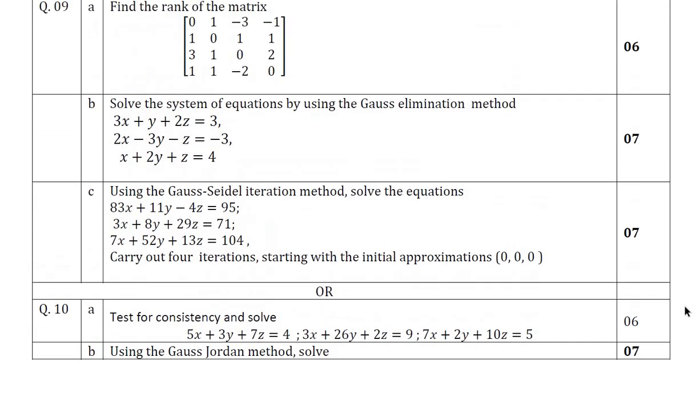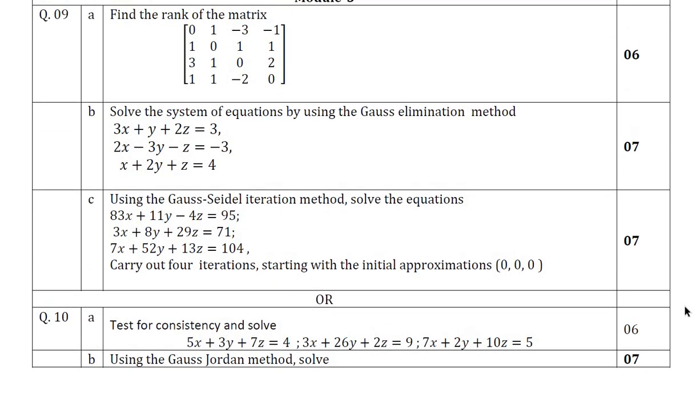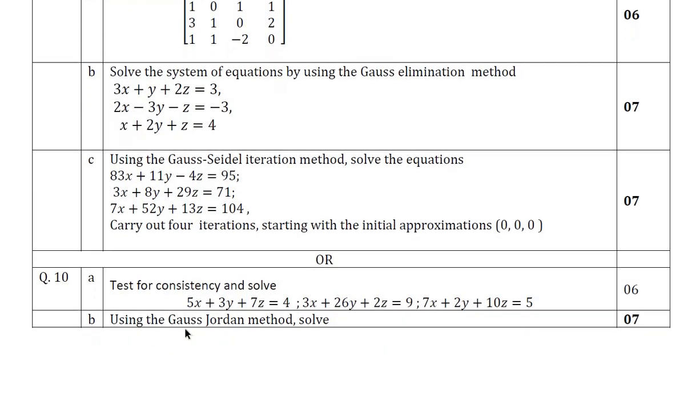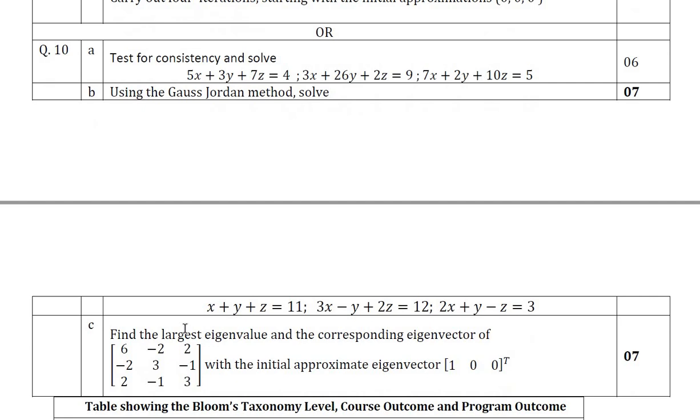Question 9 or question 10, you should answer. In question number 9A, they have asked find the rank of the matrix. Question number 9B, they have asked Gauss Elimination. Question number 9C, they have asked Gauss Seidel method. Question number 10A, consistency. Question number 10B, Gauss Jordan. Question number 10C, they have asked the largest eigenvalue and eigenvector of the given matrix.